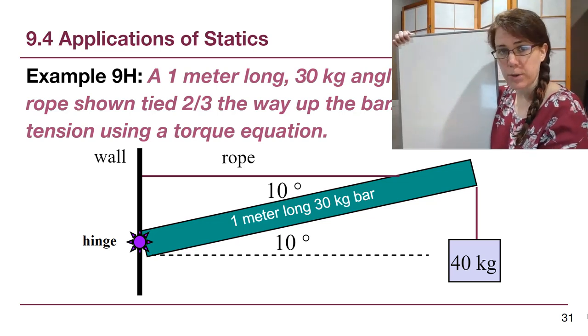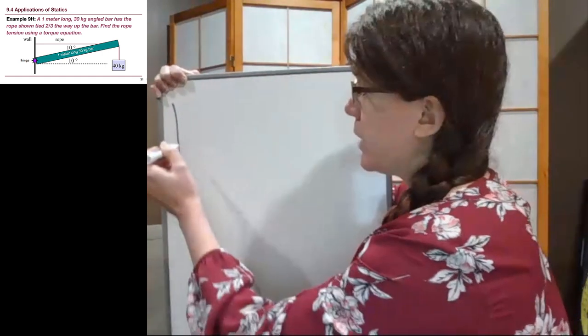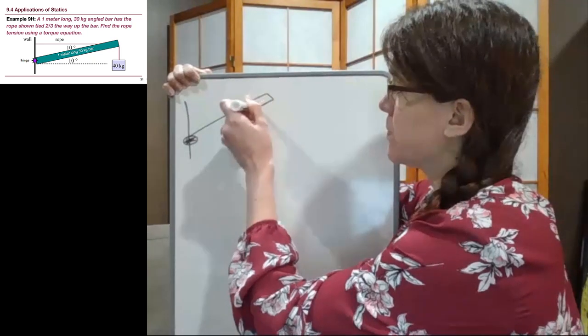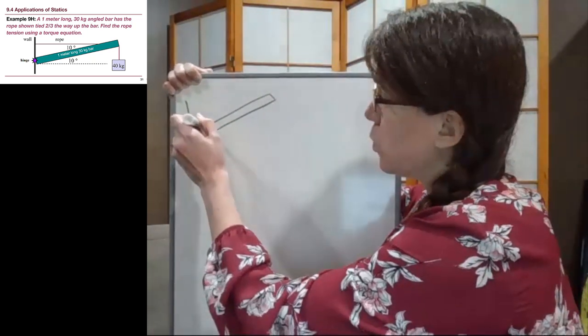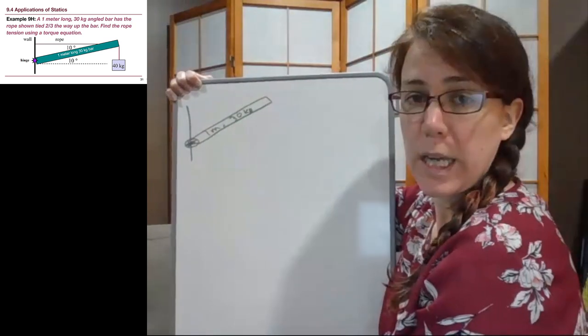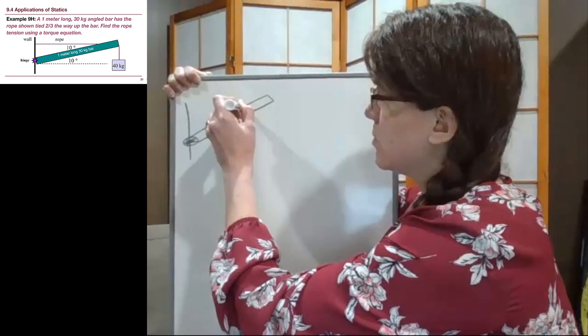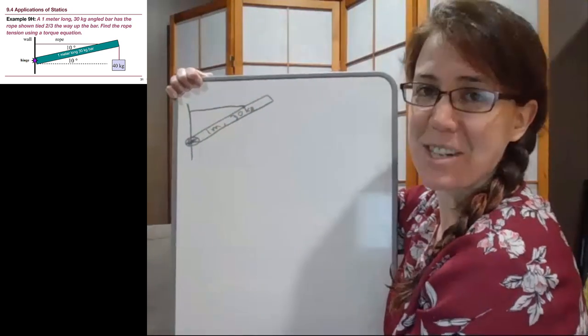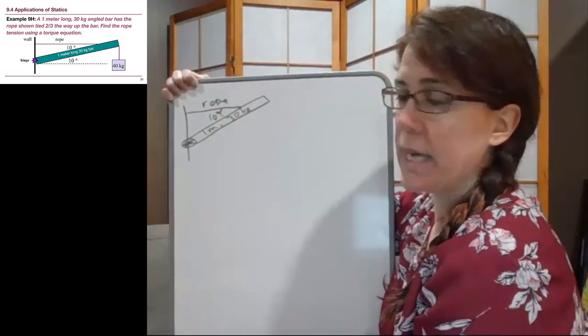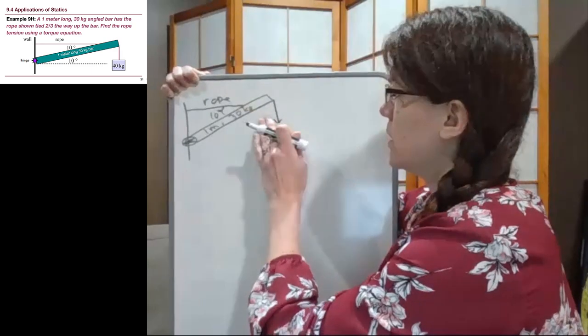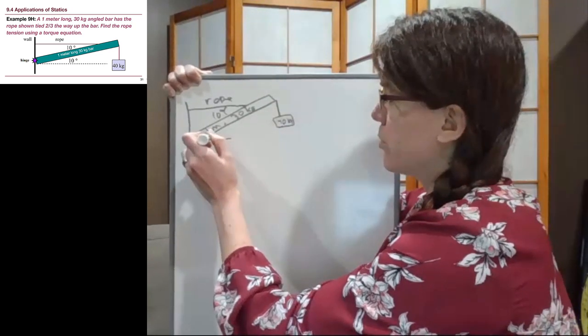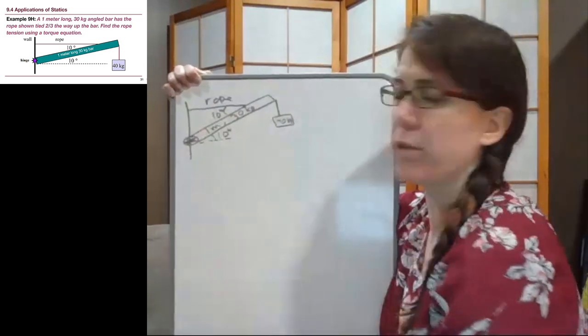So let's draw the picture as usual. We have a wall here and there is a hinge. And so just like with our drawbridge example, that hinge becomes the axis. We no longer have to decide where we want to put it. And we have this angled bar. It is one meter long and it is 30 kilograms. There is a rope attached to it exactly two-thirds up. We have this 10 degree angle. And we have at the end of the bar a 40 kilogram weight attached to it.